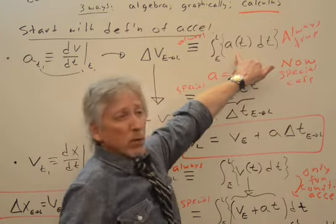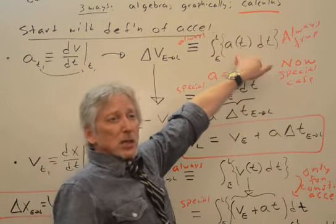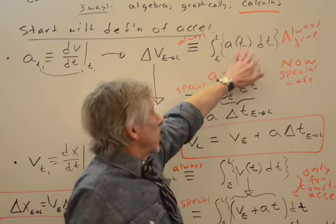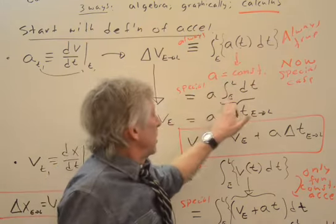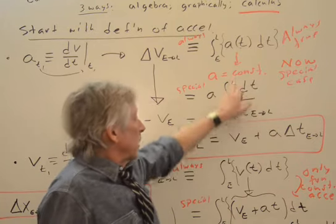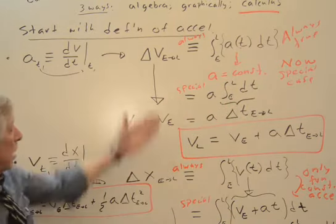this is always true, so we can go back to this whenever we get to cases where the acceleration is not constant. And when it is, though, I can pull out the A. The summation of dt over that time interval is just delta t, and I get the velocity.